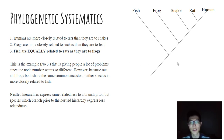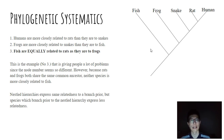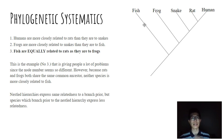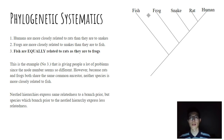One key concept here is nested hierarchies. The frogs, snakes, rat, and human form a nested hierarchy within a larger group, and they all express the same relatedness to a branch prior — meaning frogs, snakes, rats, and humans are all equally related to the fish, because they all share that one common ancestor at the same location. However, any species that branches prior to the nested hierarchy, in this case the fish, expresses less relatedness to members within that hierarchy. So nested hierarchies show equal relatedness to any branch prior to them, while species branching before the hierarchy show less relatedness to those within it.